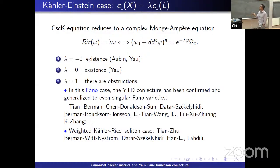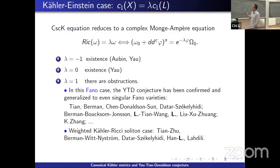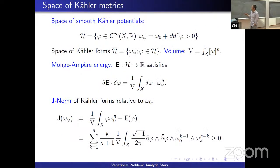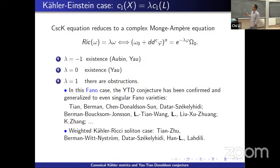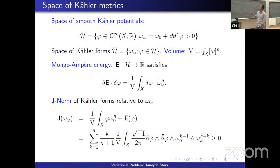There is also another generalization to the setup of Kähler-Ricci solitons. In the Fano case, the story is very complete. This is the introduction of the problem and some results. Next I want to give some ideas of how people have been studying the cscK equation and proving criteria for the existence of cscK metrics.